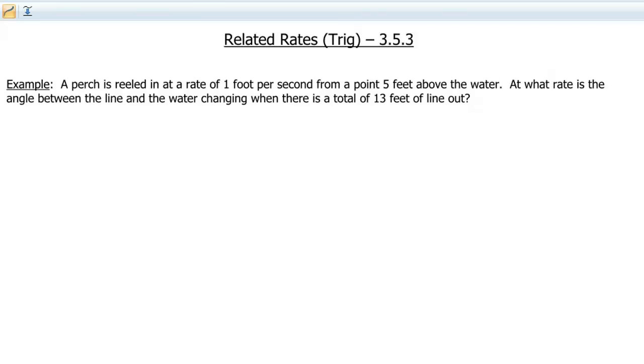Let's say you are going to be reeling a perch in at a rate of one foot per second from a point five feet above the water. At what rate is the angle between the line and the water changing when there is a total of 13 feet of line out?